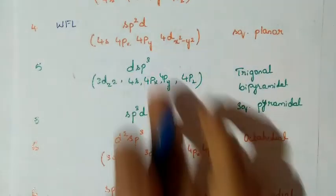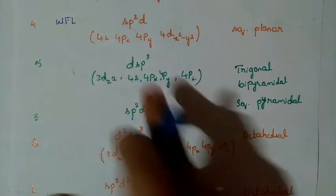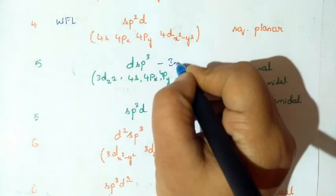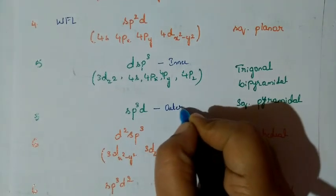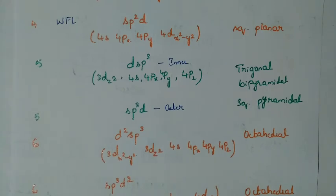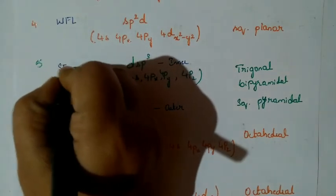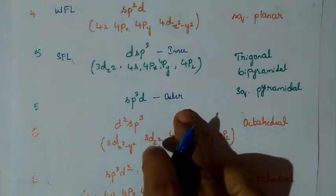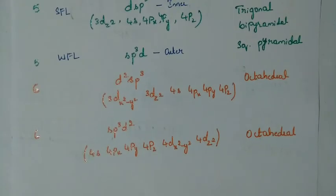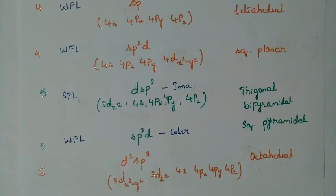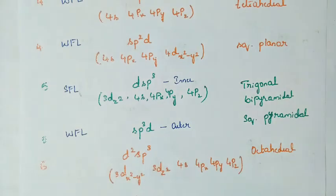For coordination number 5, we have two hybridizations: DSP3 and SP3D. DSP3 is an inner orbital complex where pairing takes place and the 3D orbital is freed — indicating a strong field ligand. SP3D is an outer orbital complex, corresponding to a weak field ligand.